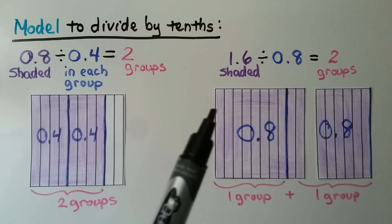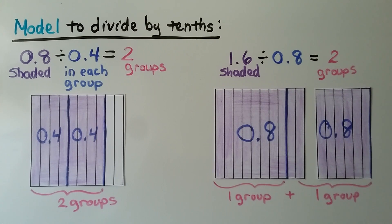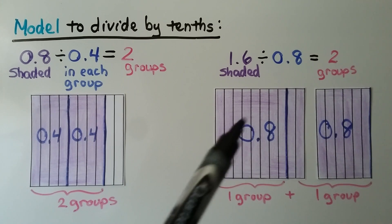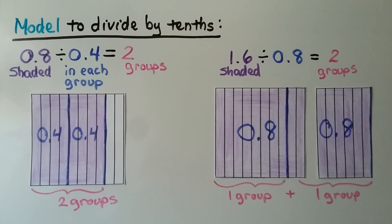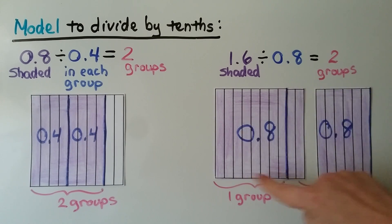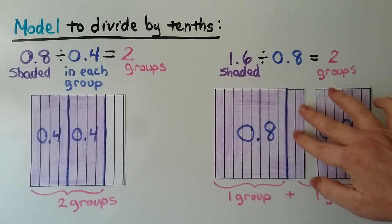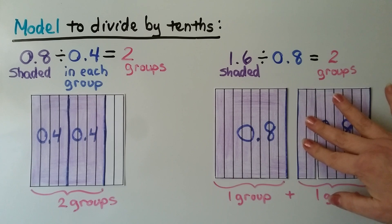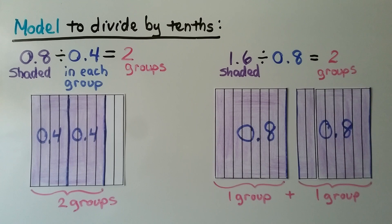Here we have 1 and 6 tenths divided by 8 tenths. We make a line to separate 8 tenths, and here we have another 8 tenths — this is 1 whole. We divide it into a group that has 8 tenths in it, and we can move this part of the whole over to make another 8 tenths. We have 2 groups, so 1 and 6 tenths divided by 8 tenths equals 2.